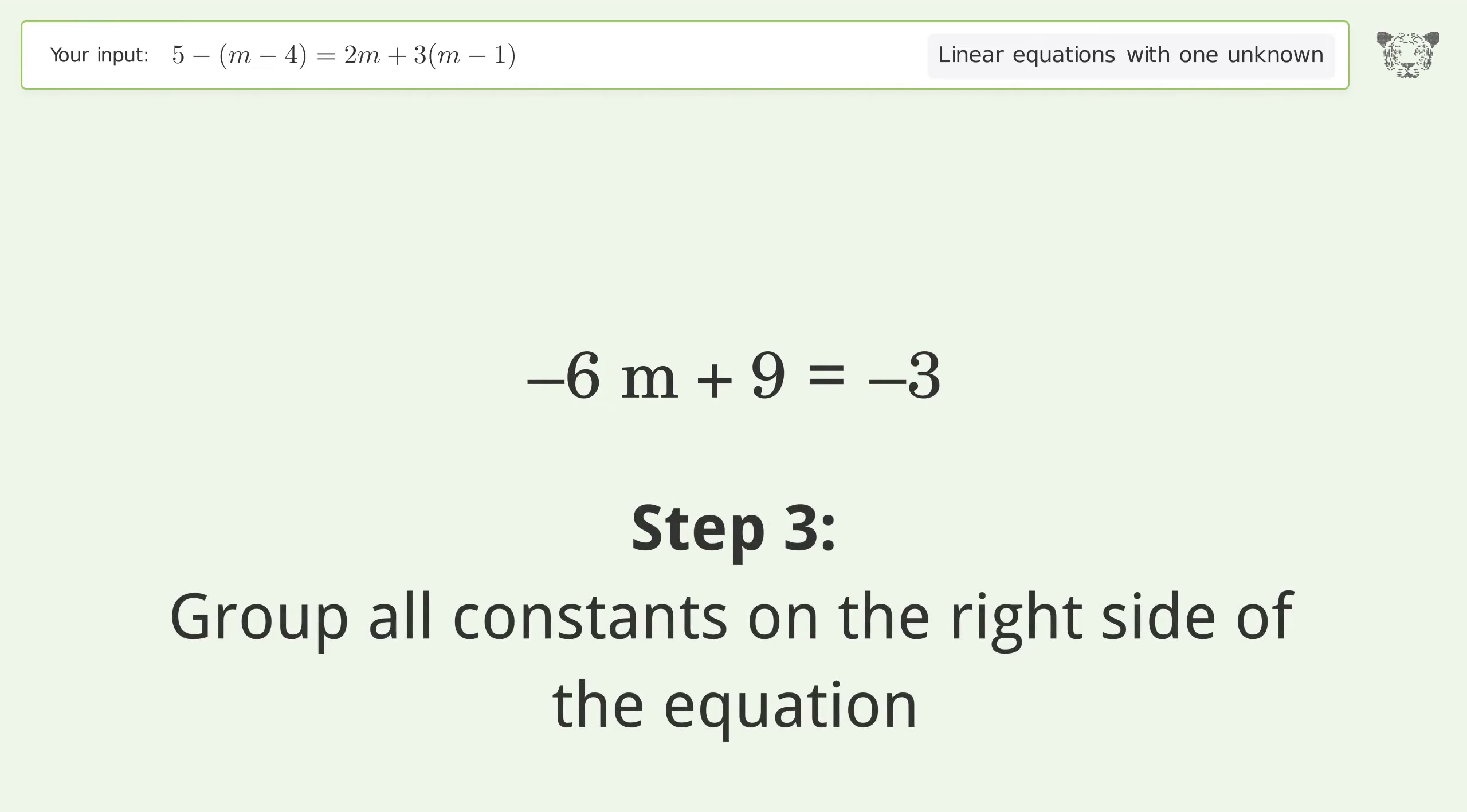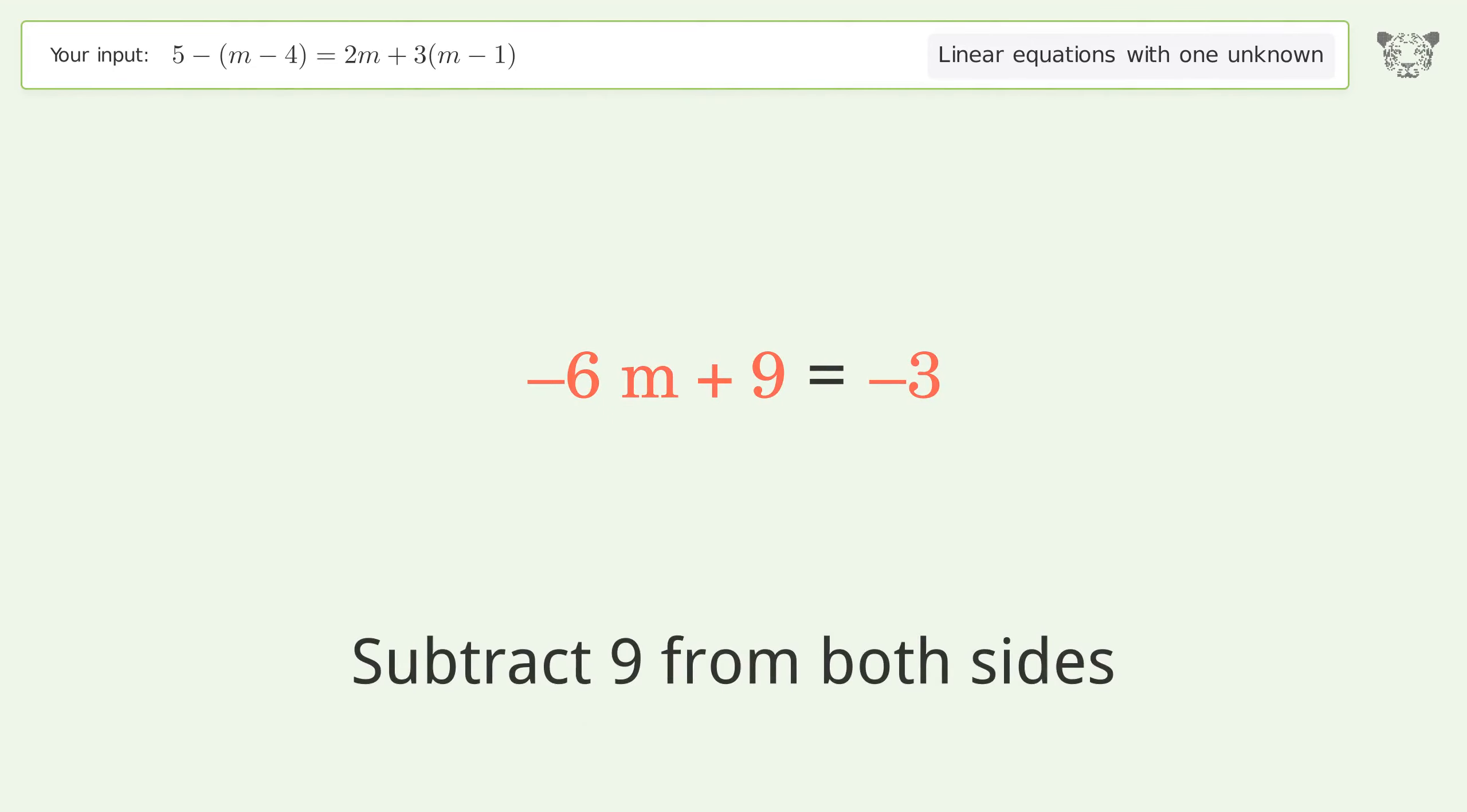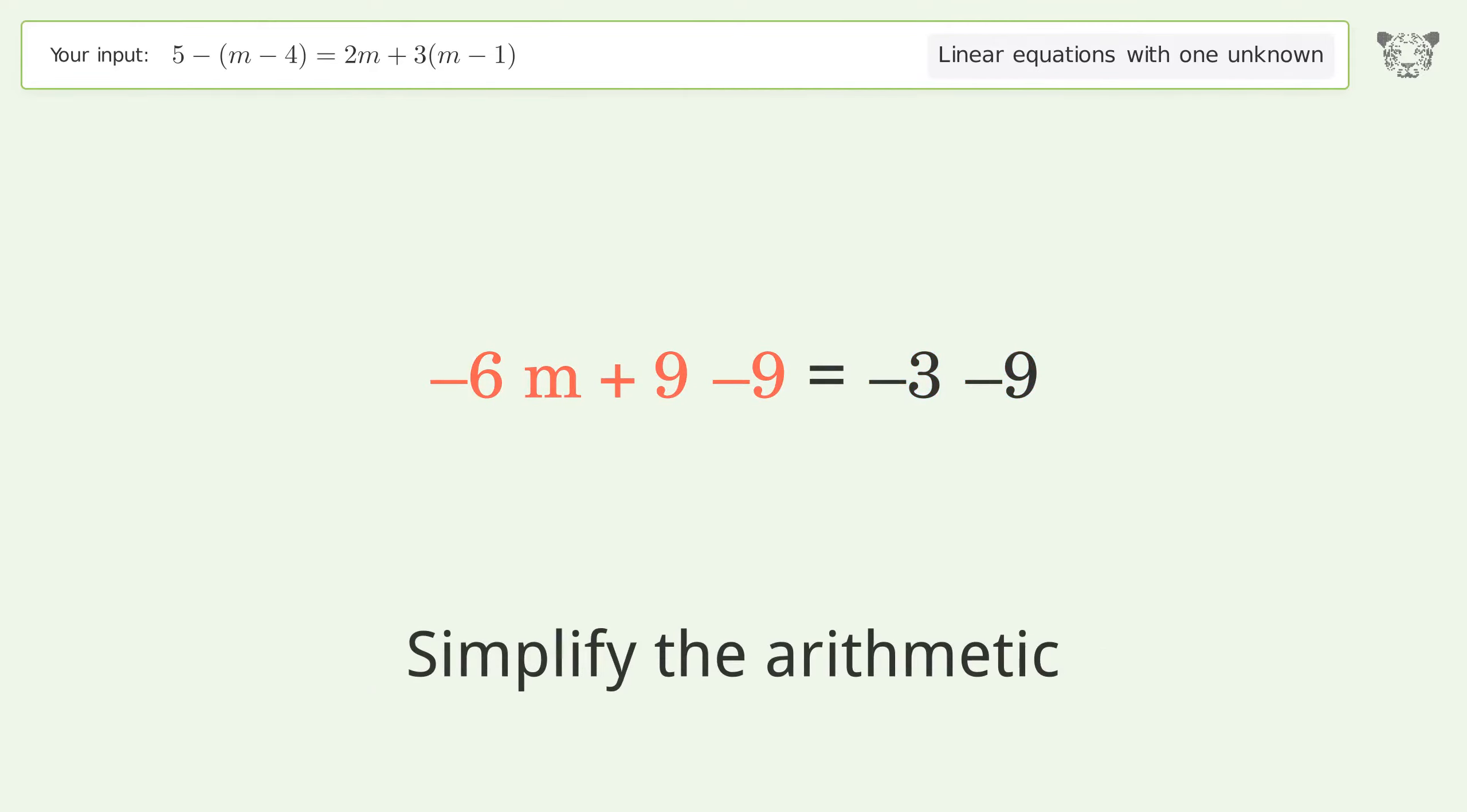Group all constants on the right side of the equation. Subtract 9 from both sides. Simplify the arithmetic.